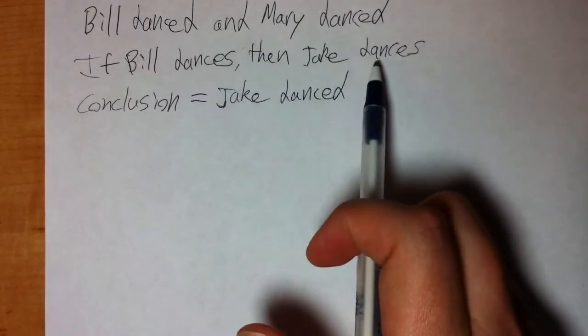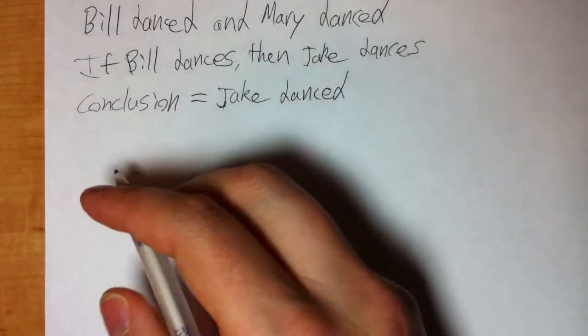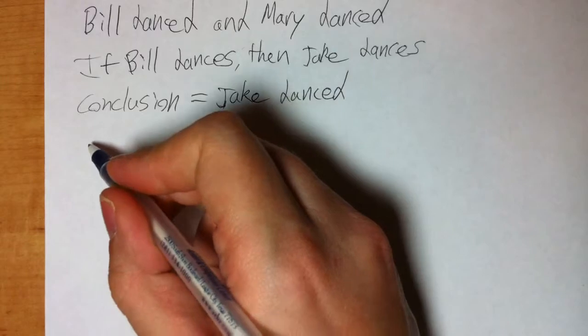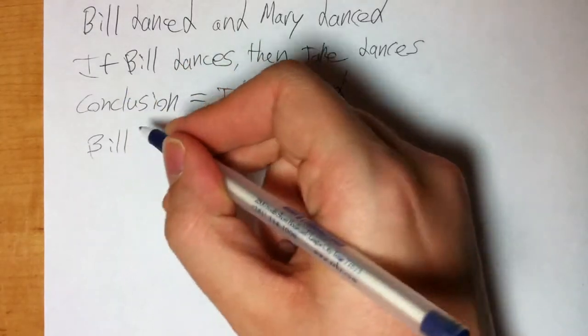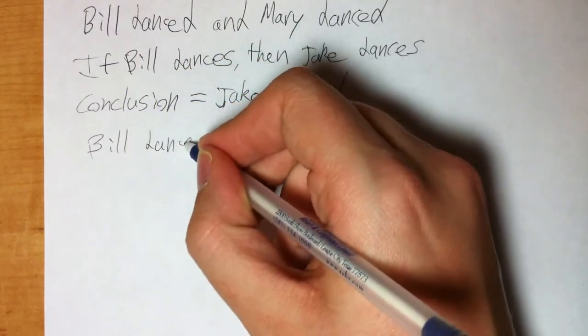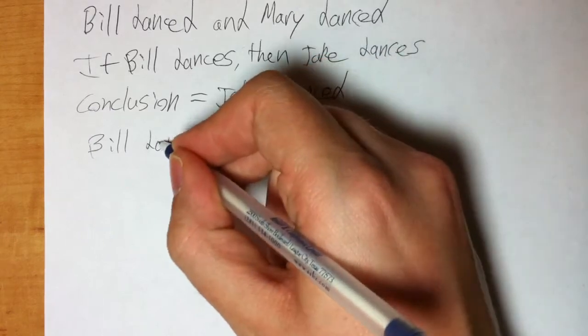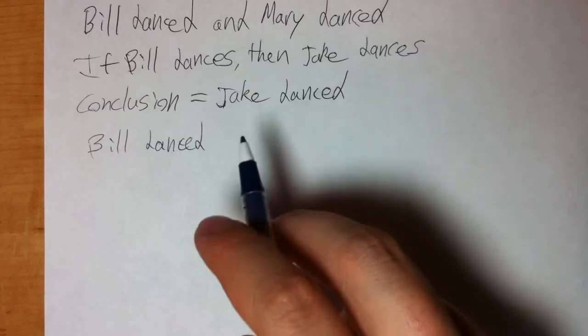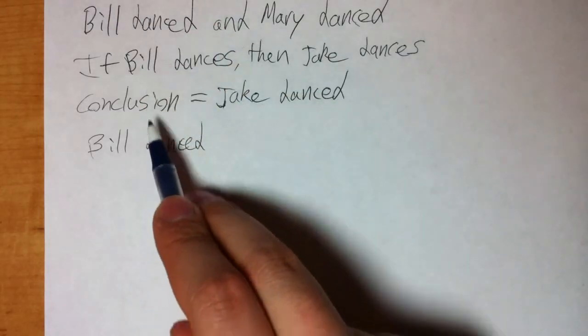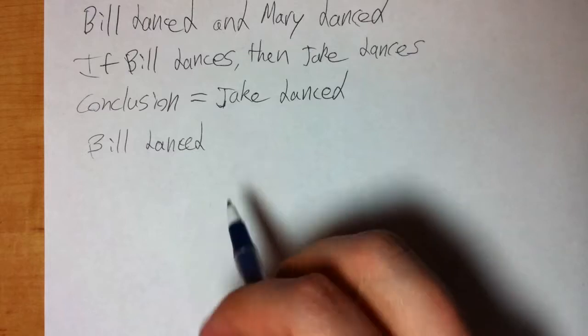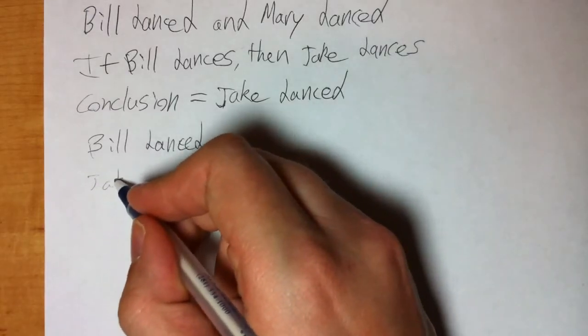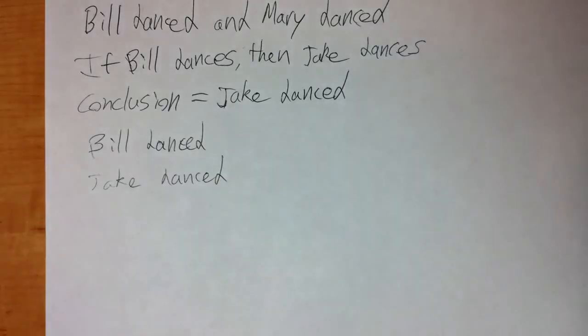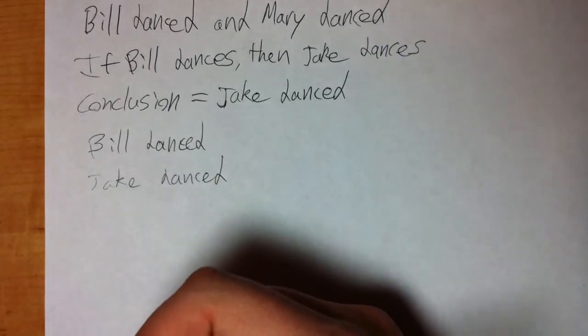I know that if Bill dances then Jake danced, and I know from the first line that Bill danced. So I know that Bill danced and I know that if Bill dances then Jake dances, so Jake dances. Based on this line and this line I can conclude that Jake danced. That's all a proof really is, that's essentially the idea.